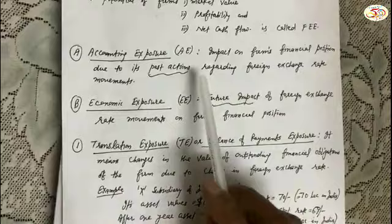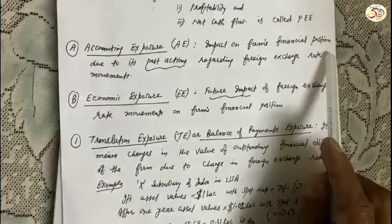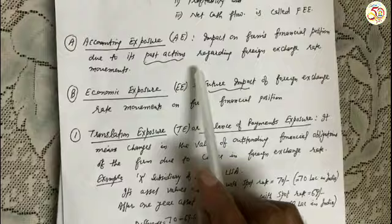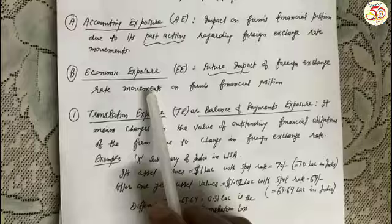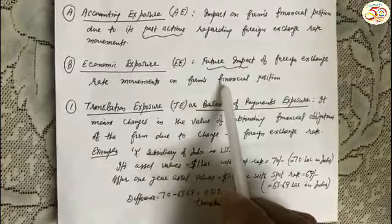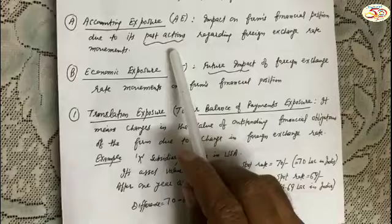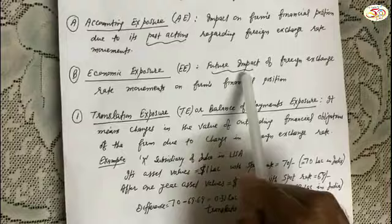The first type is accounting exposure. Accounting exposure can be defined as the impact on the firm's financial position due to its past actions regarding foreign exchange rate movement. Economic exposure, on the other hand, is the future impact of foreign exchange rate movement on the firm's financial position. So the key difference is: accounting exposure concerns past actions, while economic exposure concerns future impact.